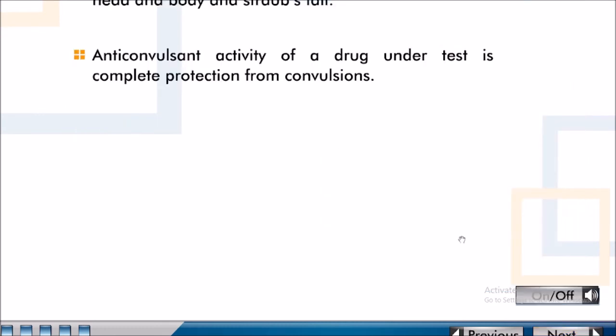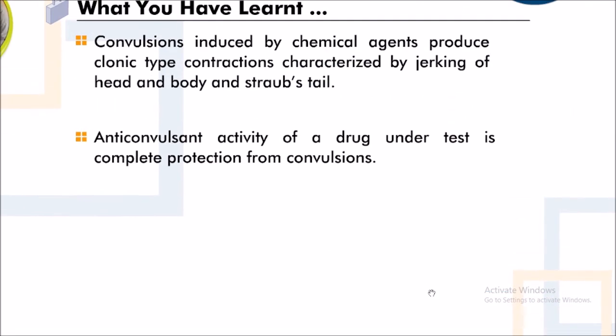Convulsions induced by chemical agents produce clonic convulsions, characterized by jerking of the head and body and Straub's tail. The anticonvulsant activity of a drug under test is measured as complete protection from convulsions.